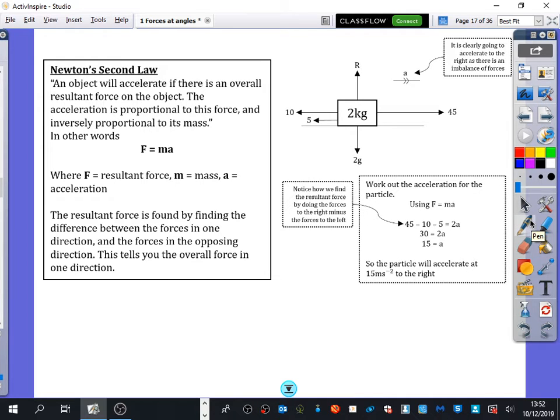Newton's second law is basically F equals MA, and it says an object will accelerate if there is an overall resultant force on the object. The acceleration is proportional to this force and is inversely proportional to its mass. F equals MA, where F is the resultant force, M is the mass, and A is the acceleration.